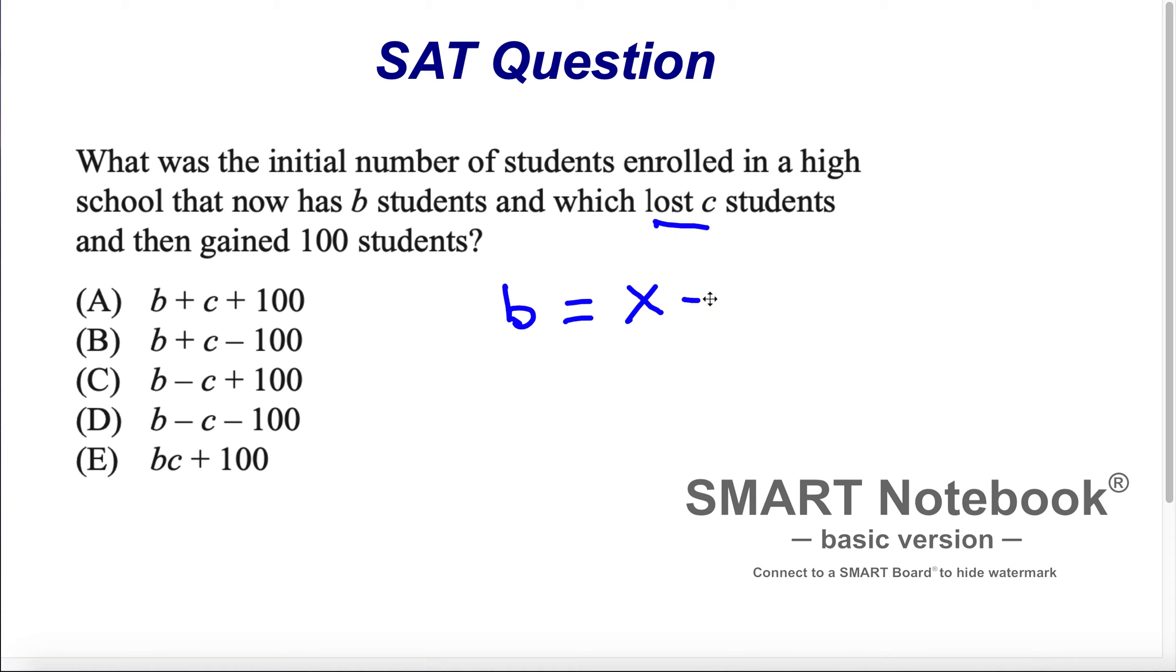Let's write this lost minus C. For the lost, let's write with the operator minus. And then gained 100 students, let's write it with a positive number plus 100.